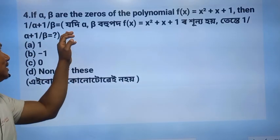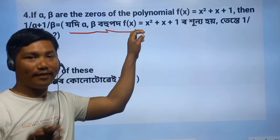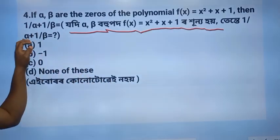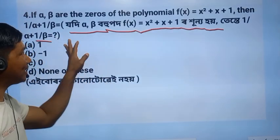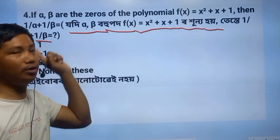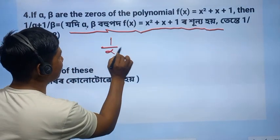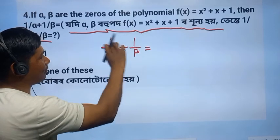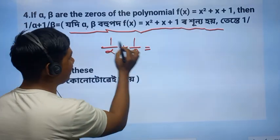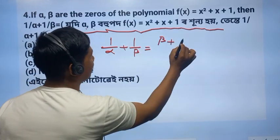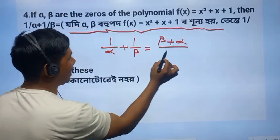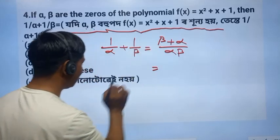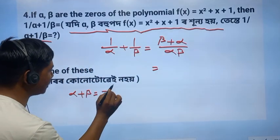The question is: if alpha and beta are roots of x squared plus x plus 1, then 1 by alpha plus 1 by beta is equal to what? The formula is that alpha plus beta equals minus b by a.